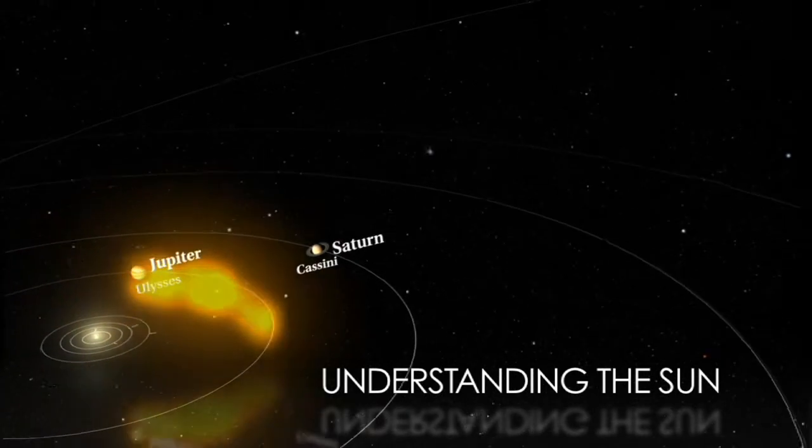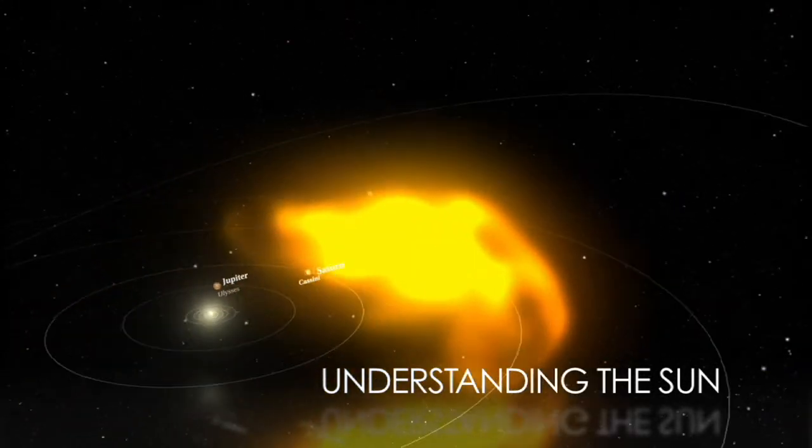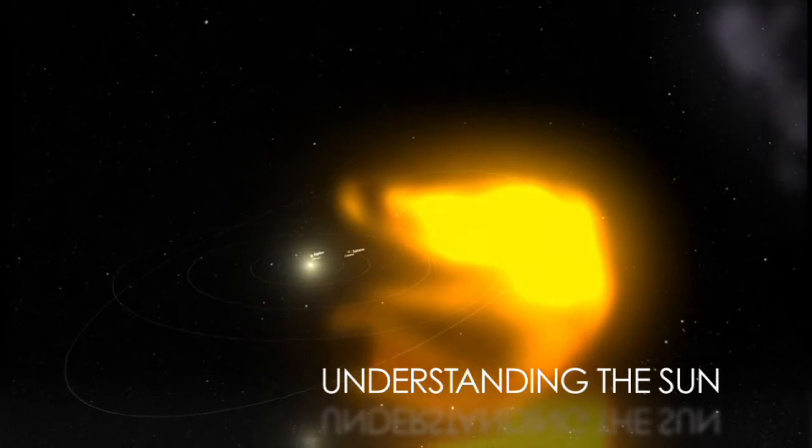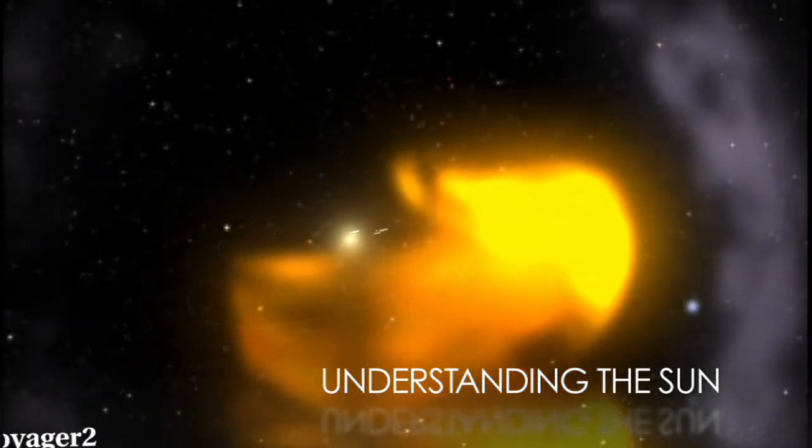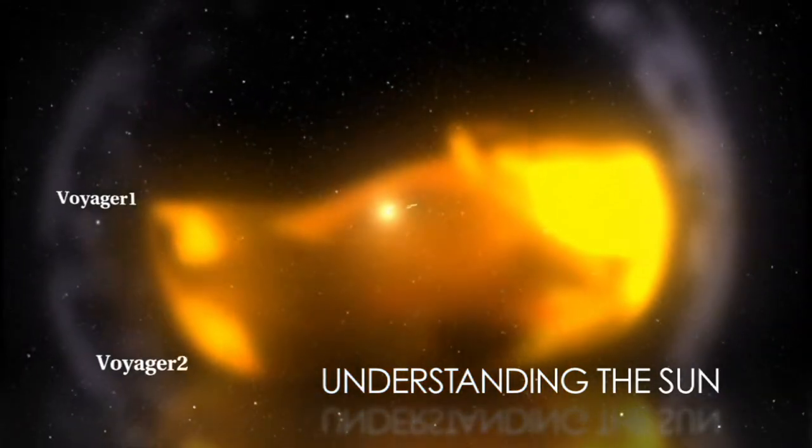We feel its effects on Earth in many ways, and once we leave our protective atmosphere, it affects our satellites, robotic missions, and human explorers. The Sun's reach goes to the edge of the solar system, and we need to understand how it works.